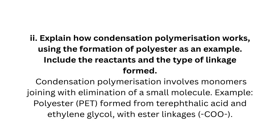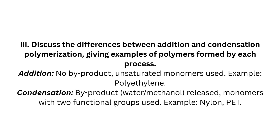Long answer Question 2: Explain how condensation polymerization works, using the formation of polyester as an example. Include the reactants and the type of linkage formed. Condensation polymerization involves monomers joining with elimination of a small molecule. Example: polyester PET, formed from terephthalic acid and ethylene glycol, with ester linkages (COO).